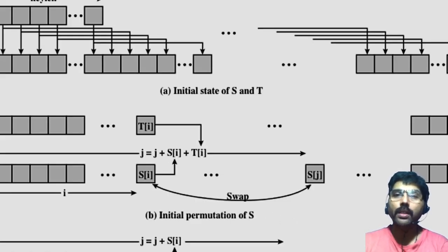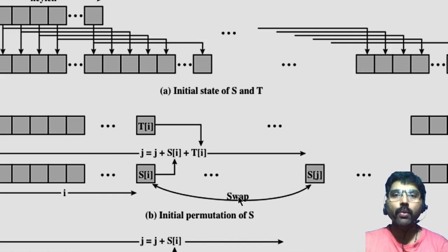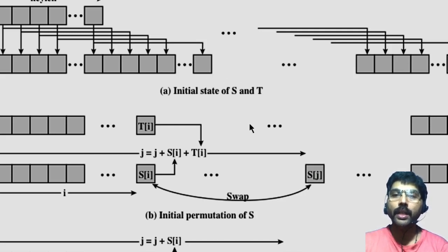The RC4 algorithm is remarkably simple and quite easy to explain. In RC4 we use a variable length key — the key size is not fixed. We also need a state vector S of size 256 bytes, ranging from 0 to 255, and this state vector is initialized by the variable length key.